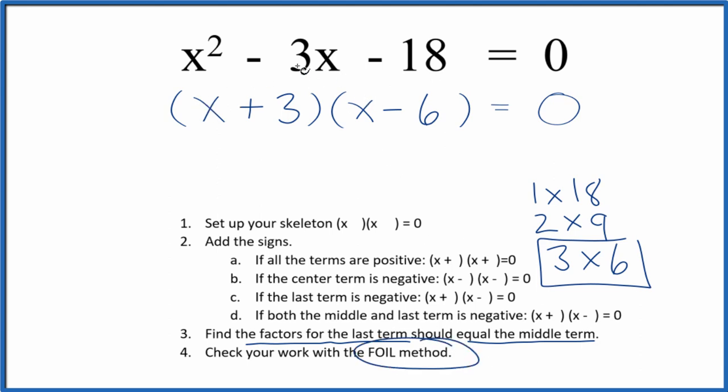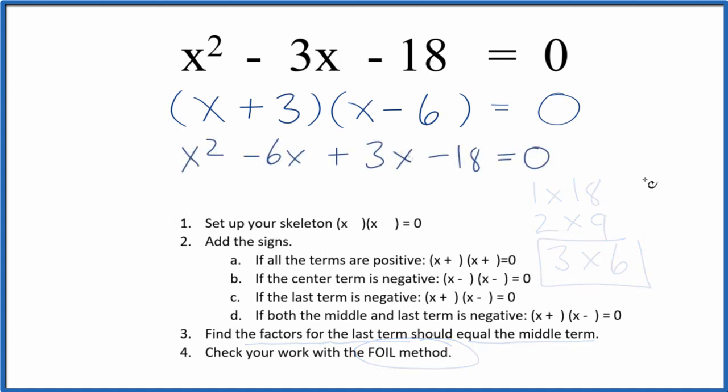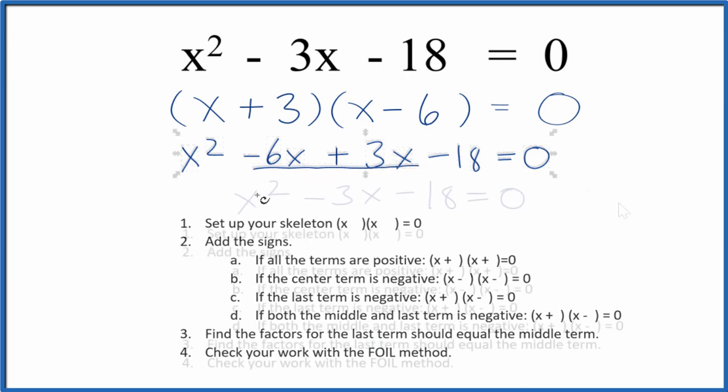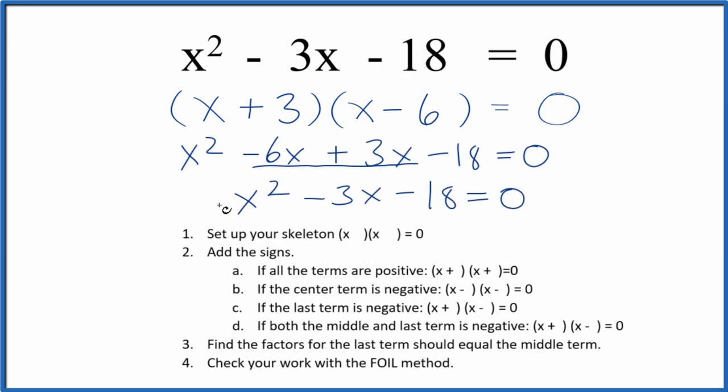That gives us x squared minus 6x plus 3x minus 18, and we can combine these two terms right here to get x squared minus 3x minus 18, which is what we started with. So we've done this correctly. Let's quickly find the values for x that will make this side of the statement 0.